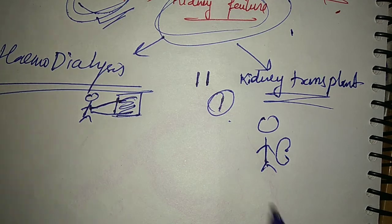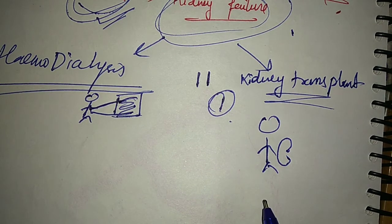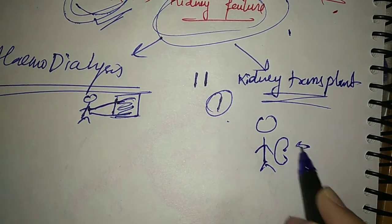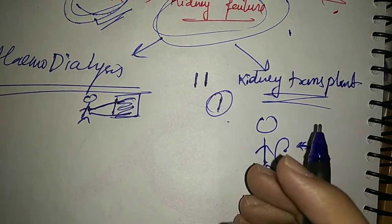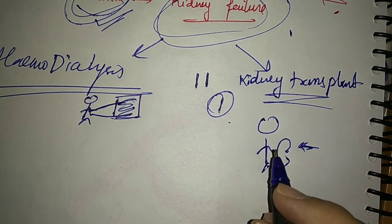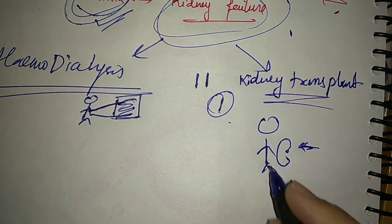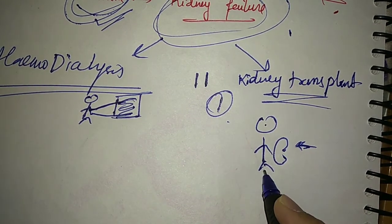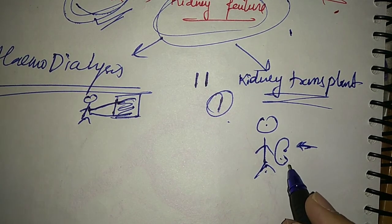First of all, matching kidney is needed. The immune system, what will it understand? That something has come from outside, some foreign object has come. Obviously the immune system will try to kill any foreign thing that comes from outside.